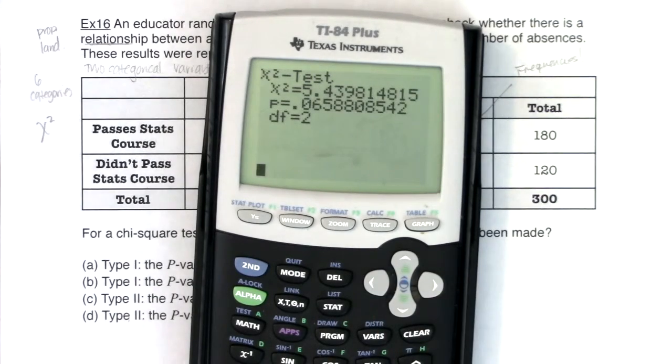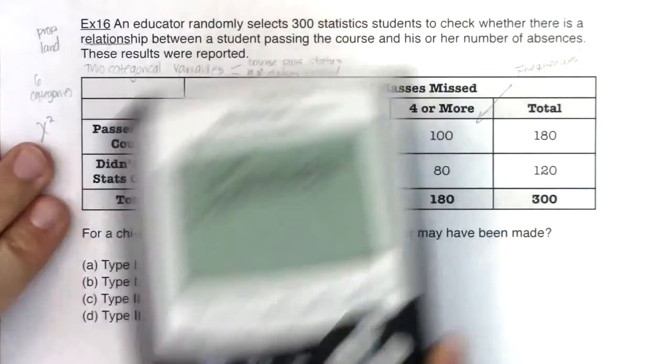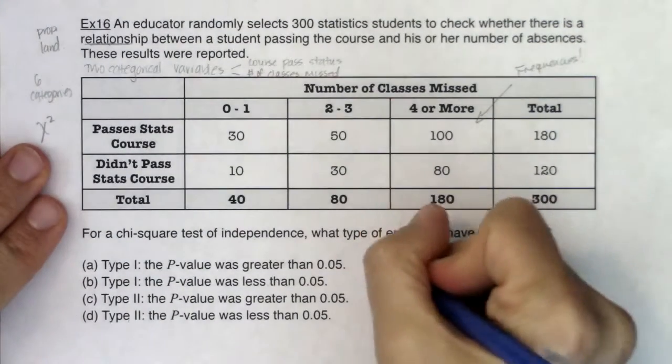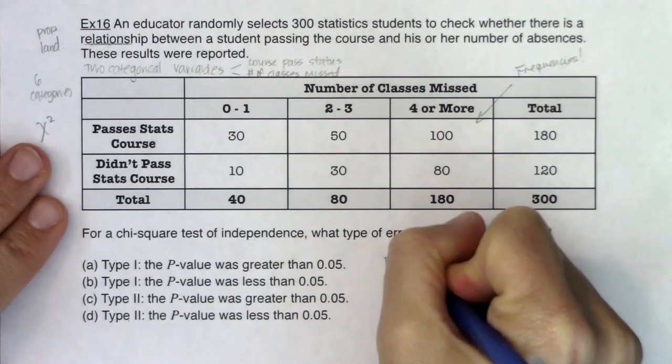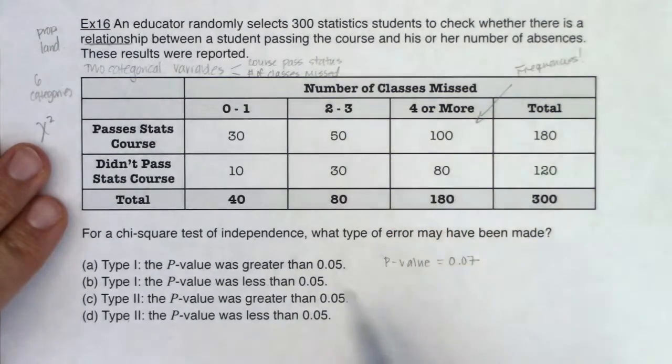And it looks like my p-value is about 7%. Alright. So let me go ahead and say here, my p-value is 0.07. So at that point, it's in reference to a p-value of 5%. So my p-value is definitely greater than 5%. So I can rule out b and I can rule out d because those two phrases have p-values less than 5%. That's just not true.